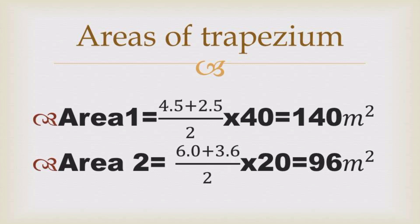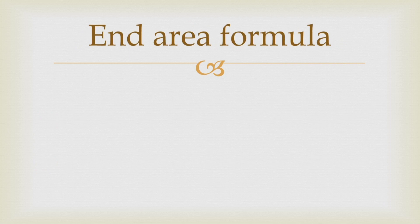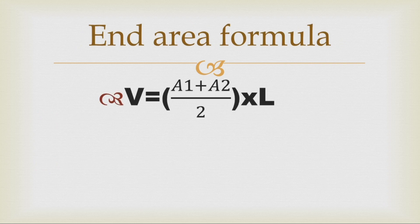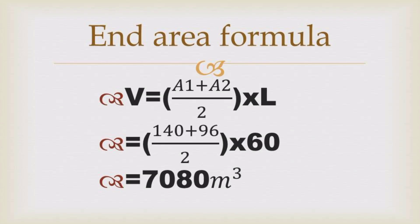Finally, we apply the end area formula using Area 1 = 140 and Area 2 = 96. So V equals (A1 + A2) divided by 2, multiplied by the length or distance between those two sections. Our answer is 7,080 cubic meters.